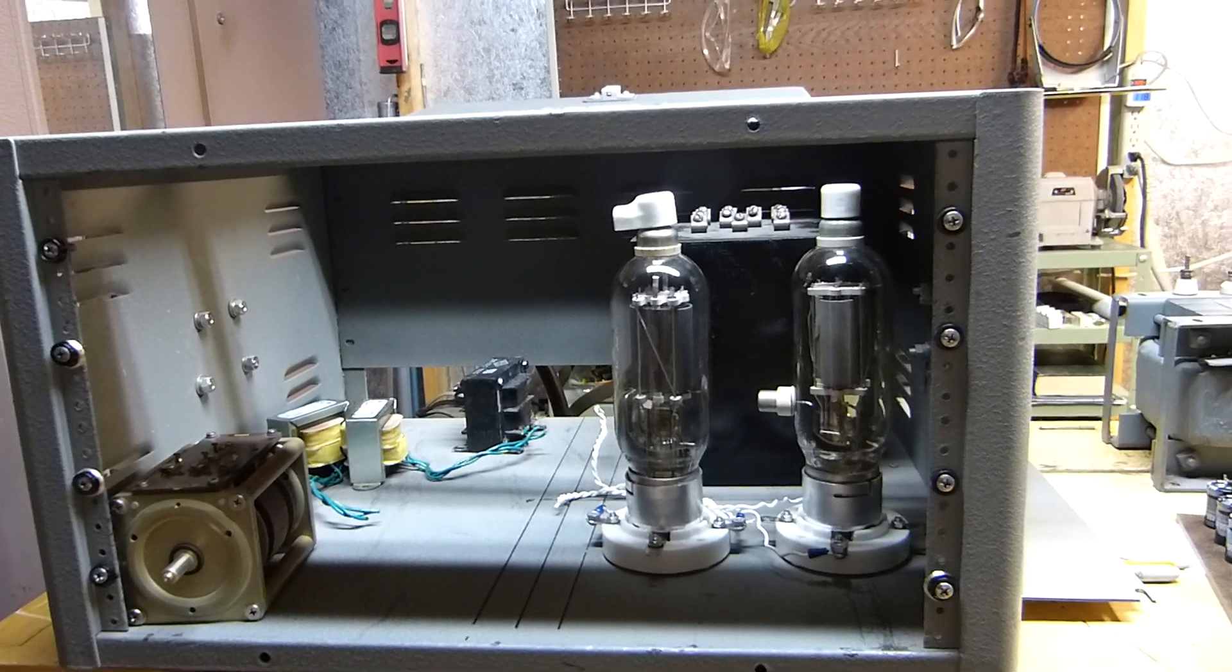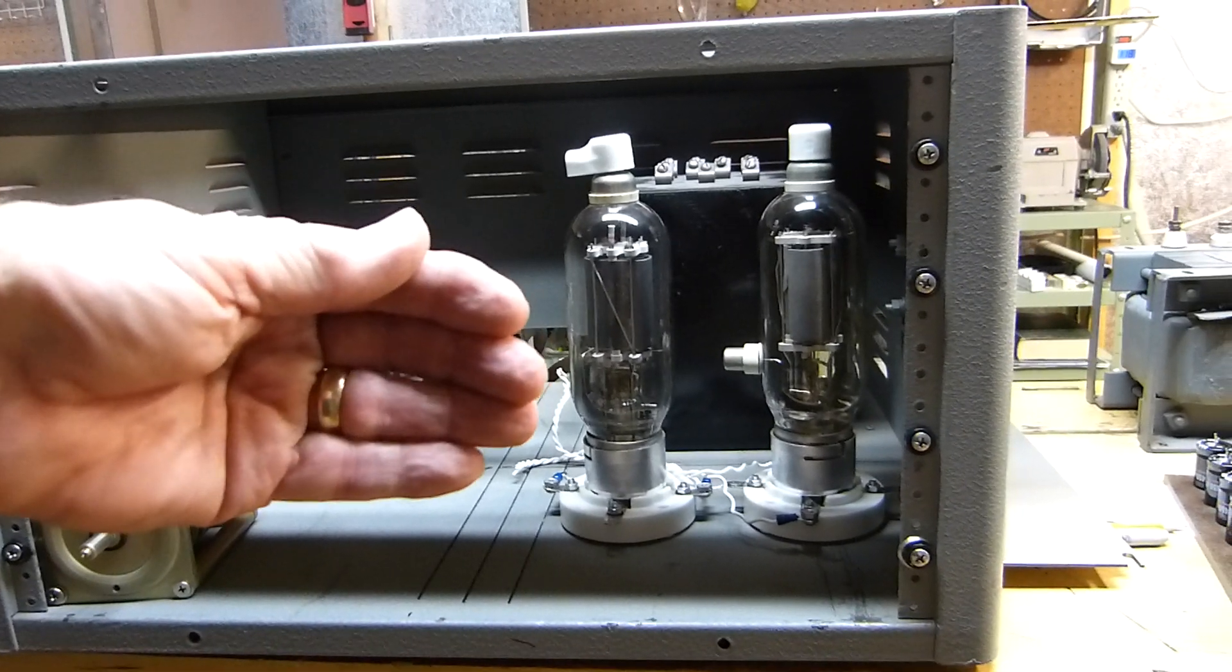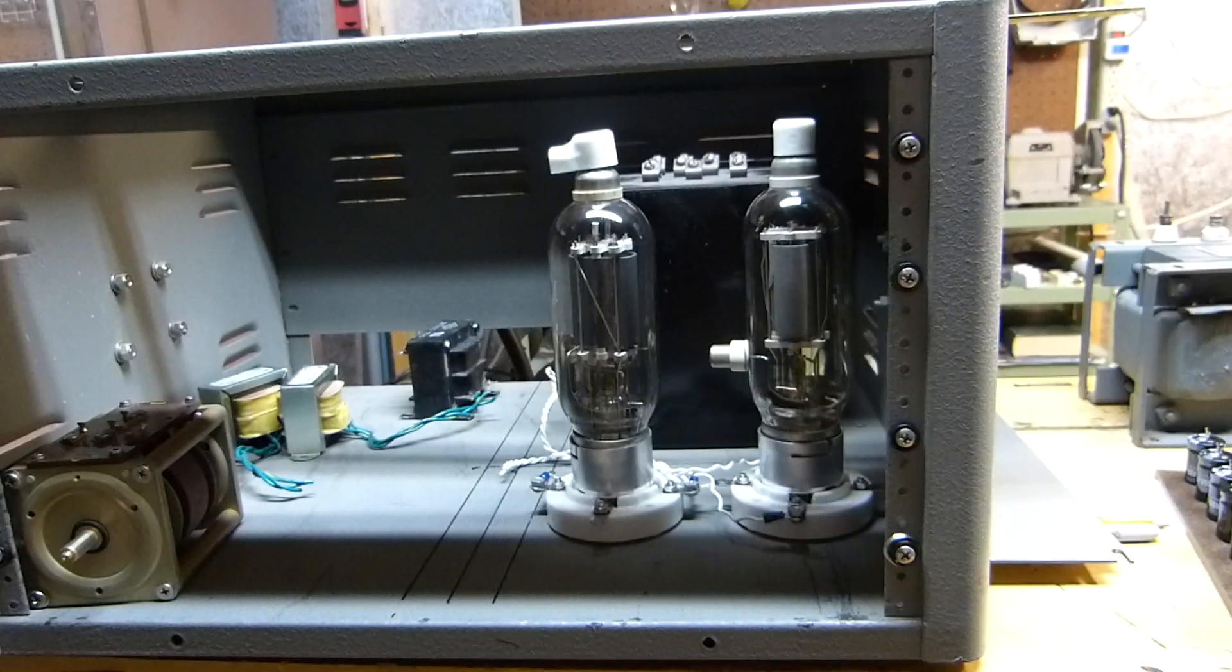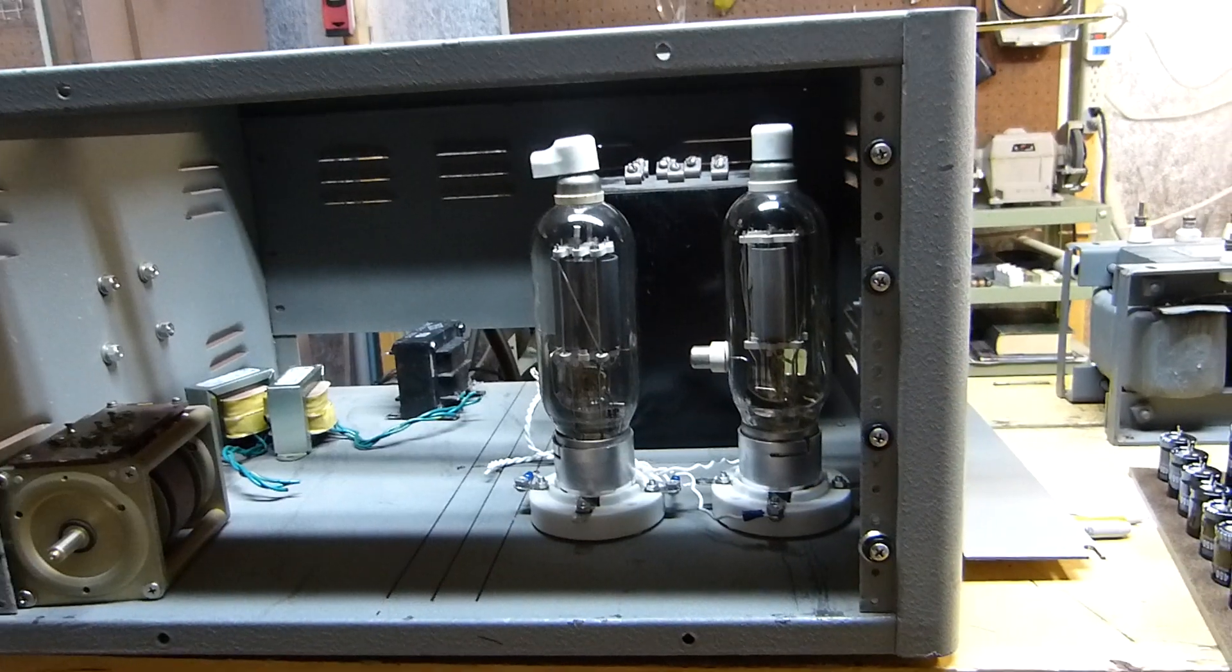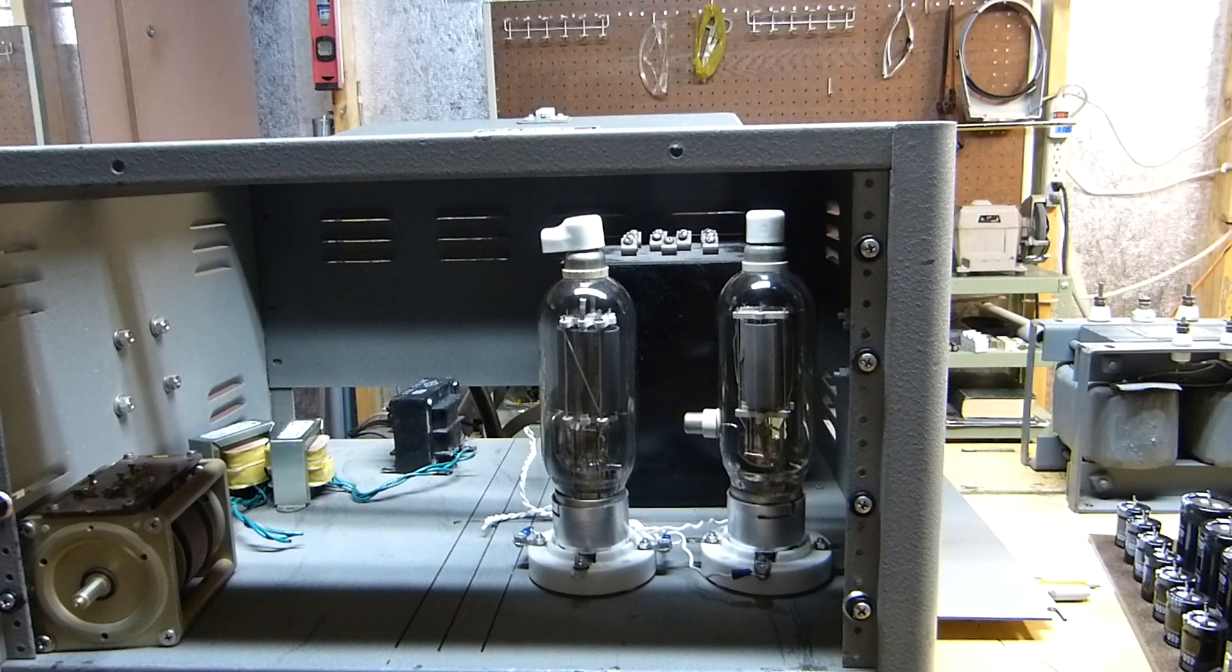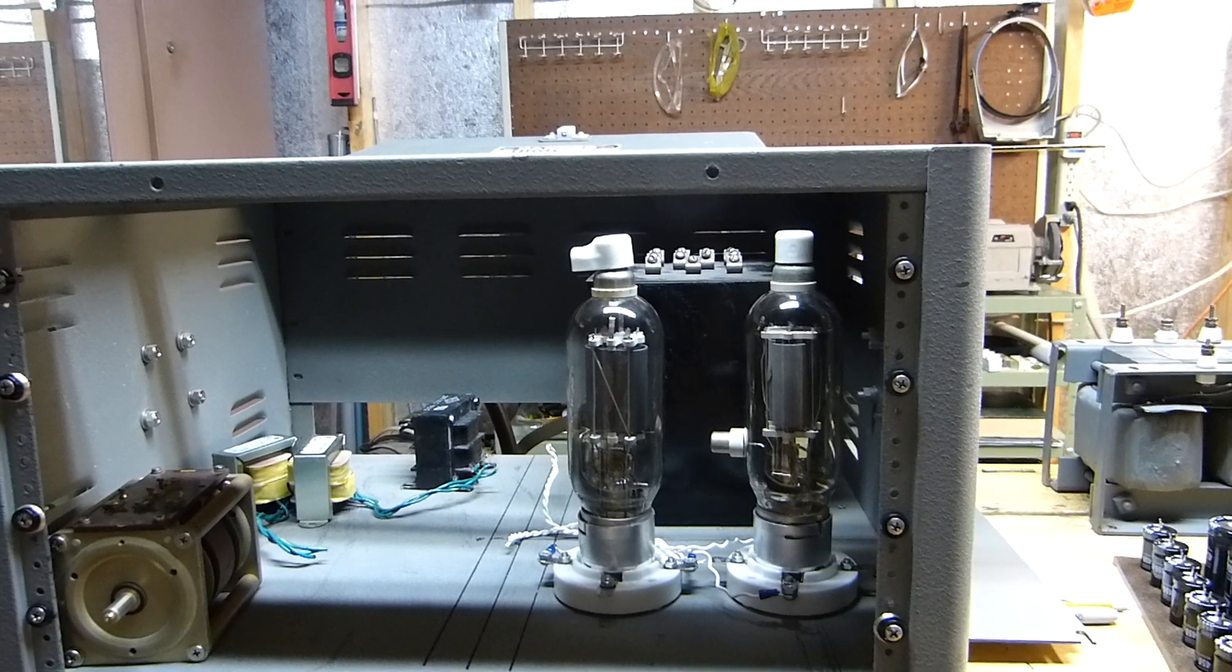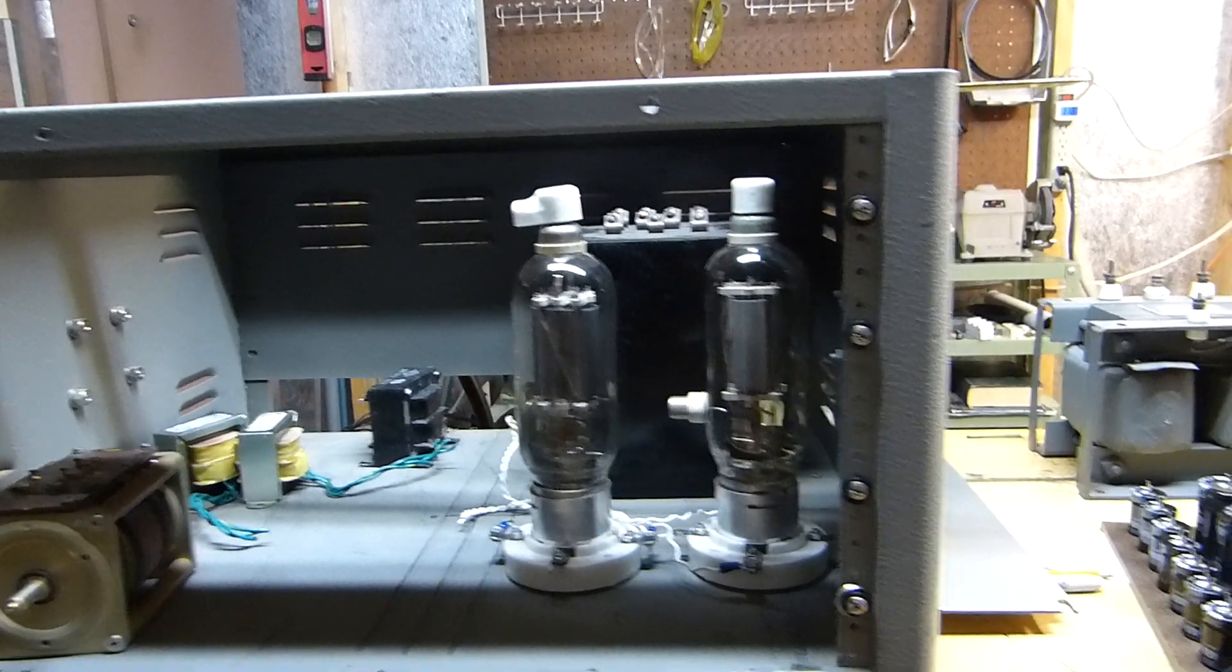That's what they were designed for, class B, which means one tube conducts and then it shuts off, the other tube conducts. It's able to put out a lot of power, 725 watts is what they're rated at. So we ought to be able to get every bit of that much.